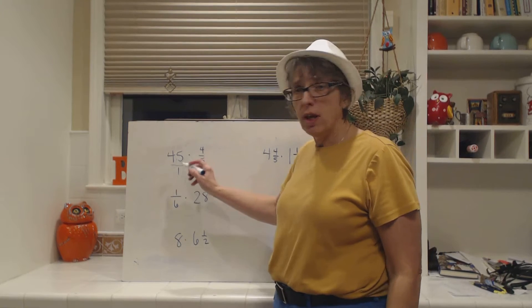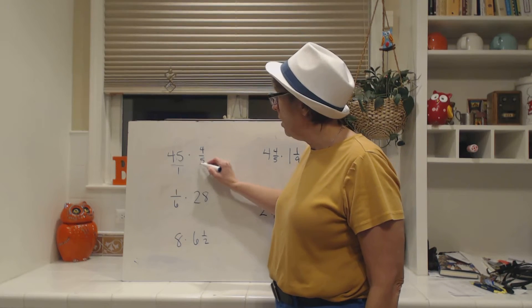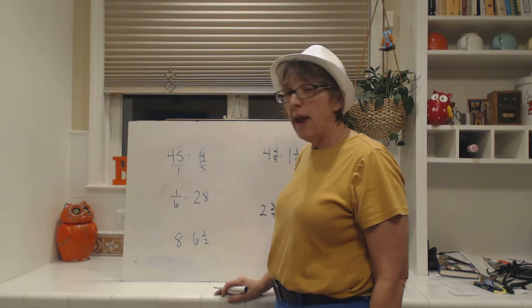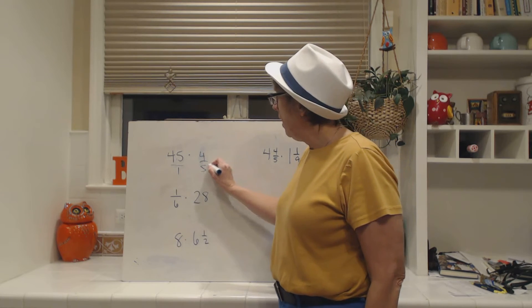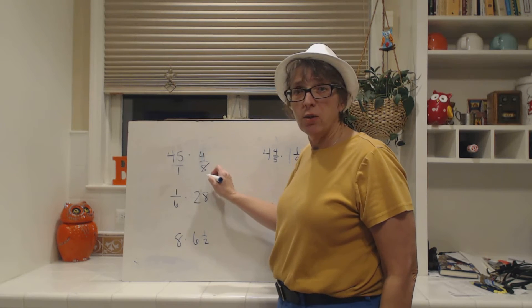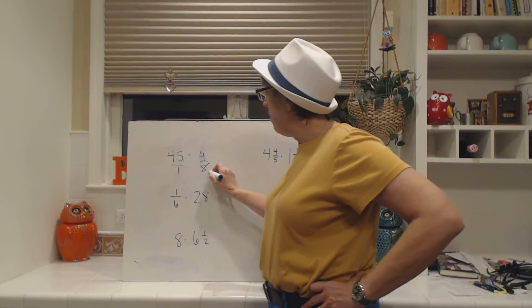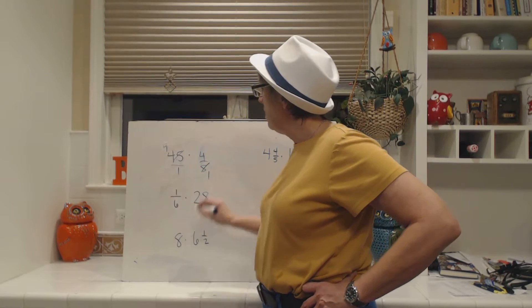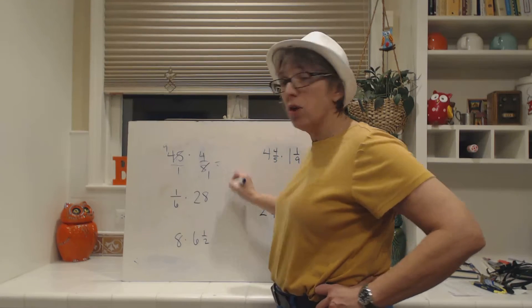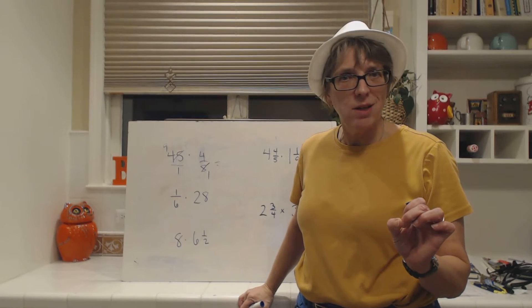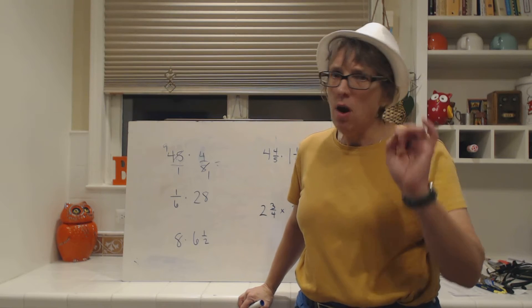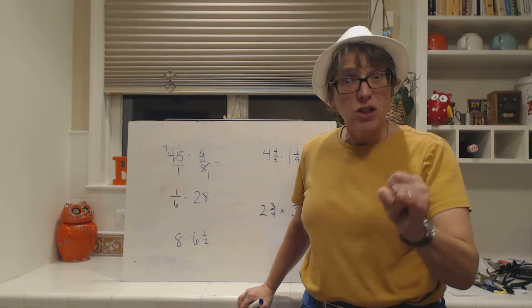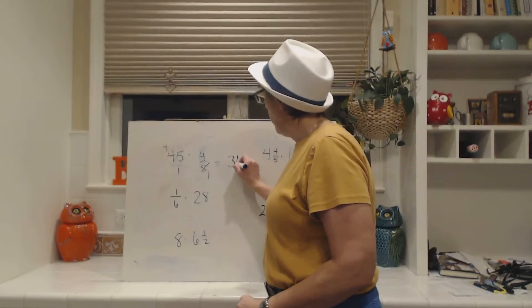So when we do this, 45 over 1 times 4/5, now I'm going to cross-cancel, and 5 is a common factor of 5 and 45. So 5 divided by 5 is 1, and 45 divided by 5 is 9. So I get 9 times 4 is 36 over 1, and you don't leave it as 36 over 1 because you're all bright. You're all smart. You all know that 36 over 1 is 36. So you can go ahead and put 36.